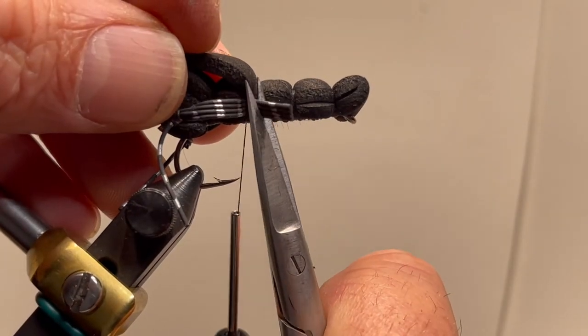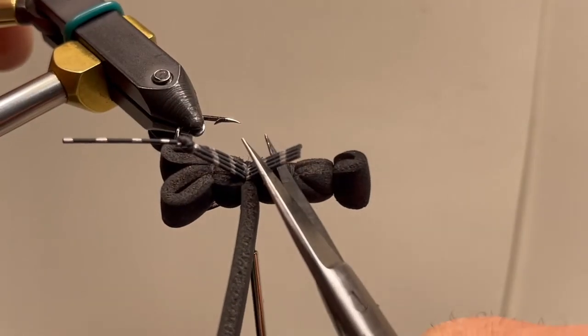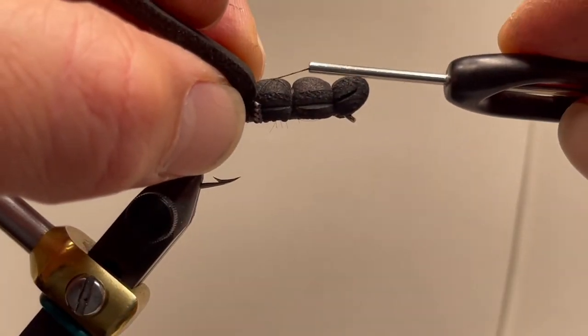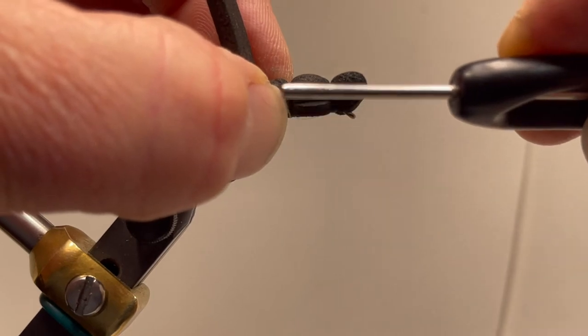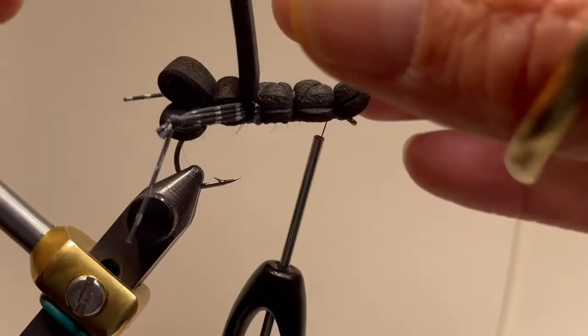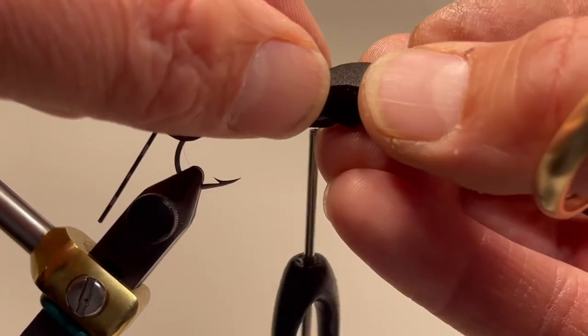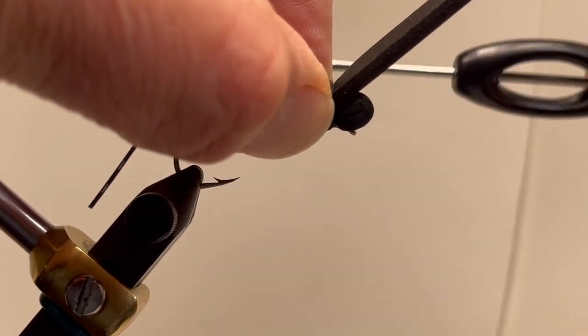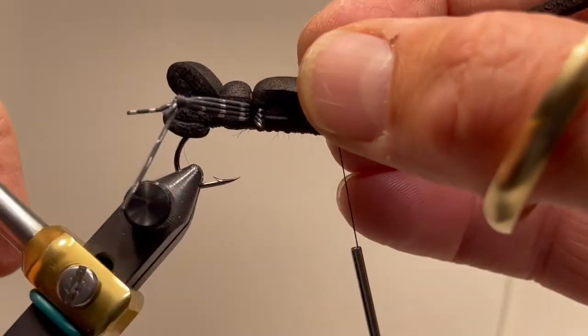We can just trim off the excess amount of rubber legs close. You can leave it a little bit long just to make sure it's good and tight. We're going to wrap forward. Cross over again, wrap forward. Lay the foam down. Secure that to the shank of the hook.